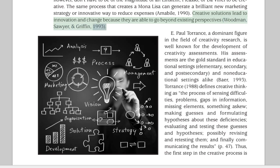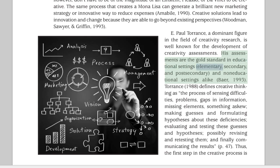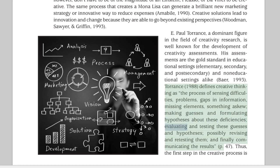Paul Torrance, a dominant figure in the field of creativity research, is well known for the development of creativity assessments. His assessments are the gold standard in educational settings — elementary, secondary, and post-secondary — and non-educational settings alike. Torrance (1988) defines creative thinking as the process of sensing difficulties, problems, gaps in information, missing elements, something askew; making guesses and formulating hypotheses about these deficiencies; evaluating and testing these guesses and hypotheses; possibly revising and retesting them; and finally communicating the results.